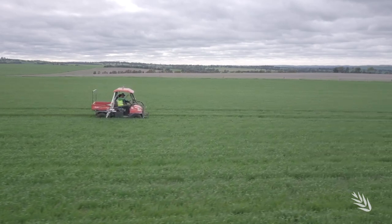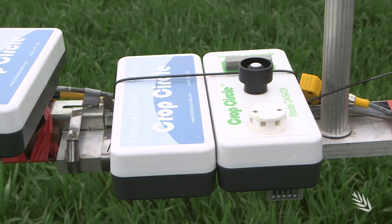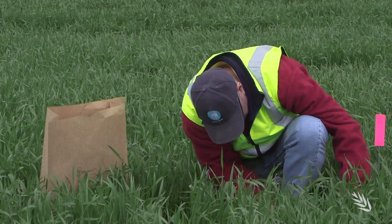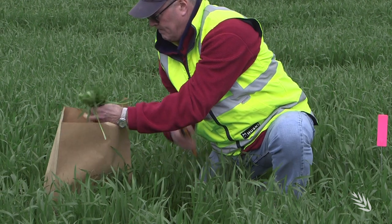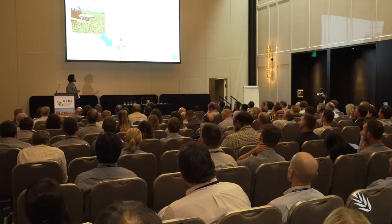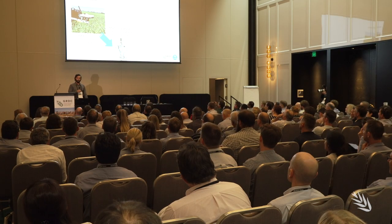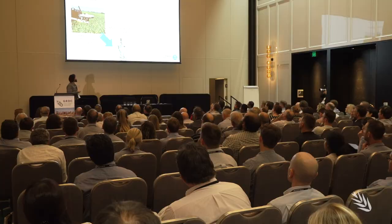Each strip was scanned with commercial proximal crop sensors and was also cut and sent to an independent lab to verify the percent N. The data collected from the sensors was then analysed using machine learning algorithms.